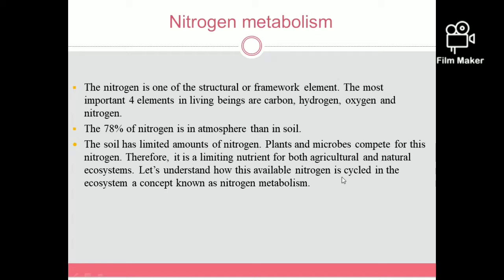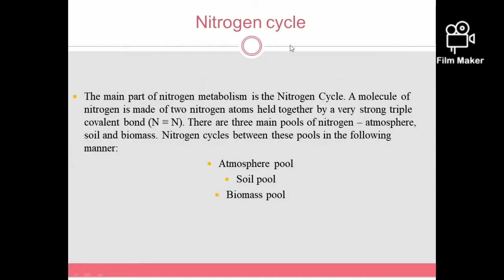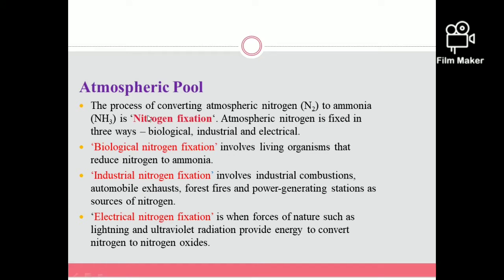The nitrogen cycle is the main part of nitrogen metabolism. One molecule of nitrogen is denoted as N with a triple covalent bond. The nitrogen cycle is divided into three main pools: atmosphere pool, soil pool, and biomass pool.